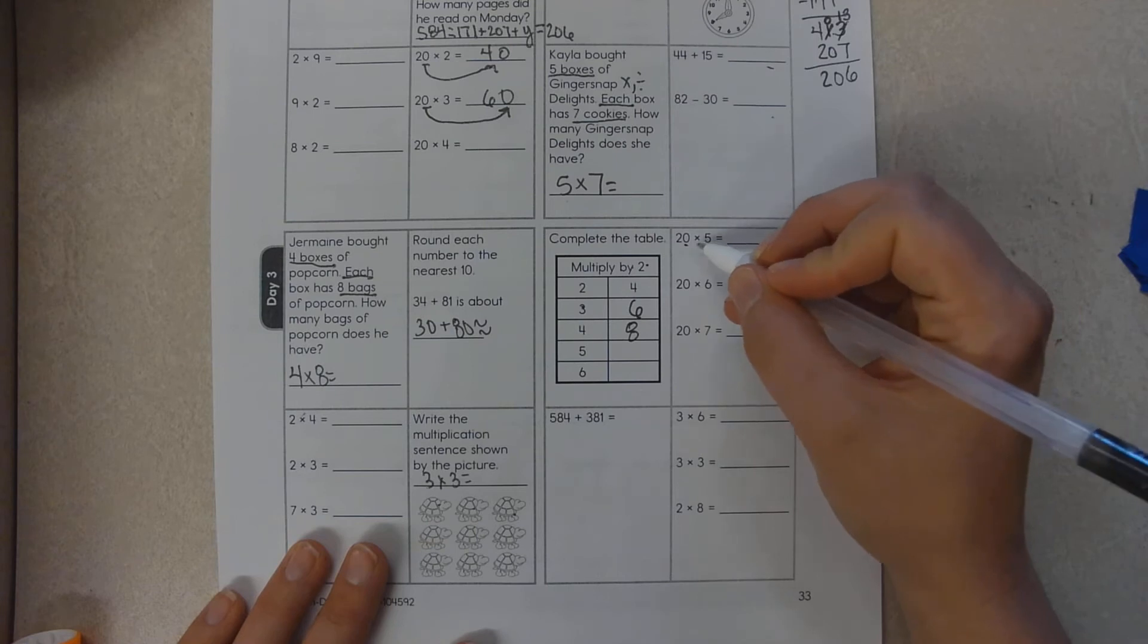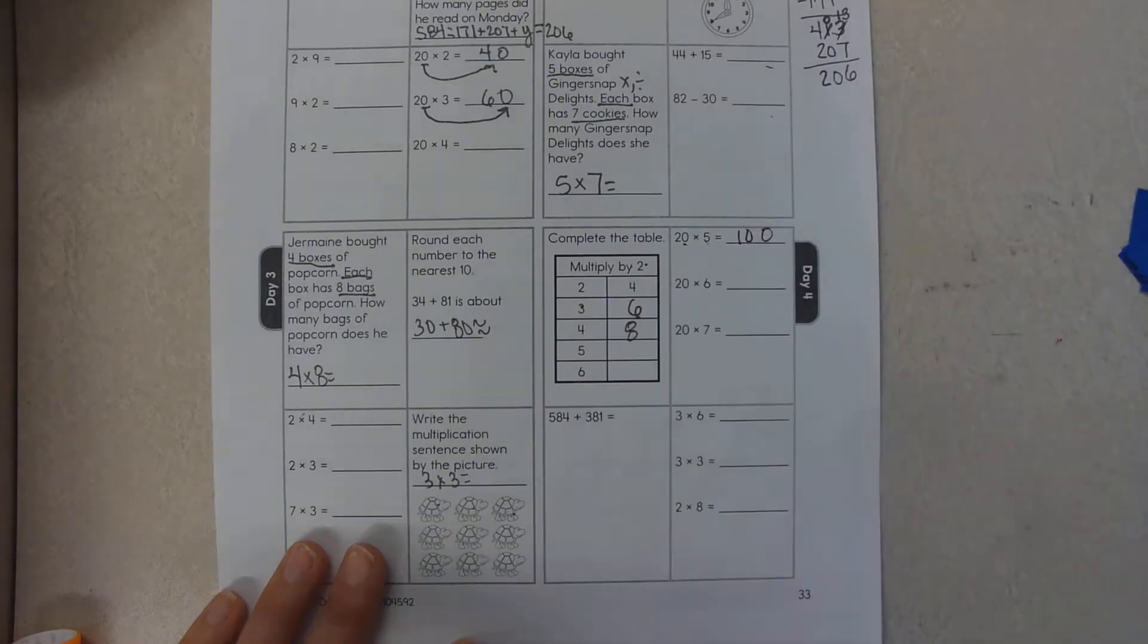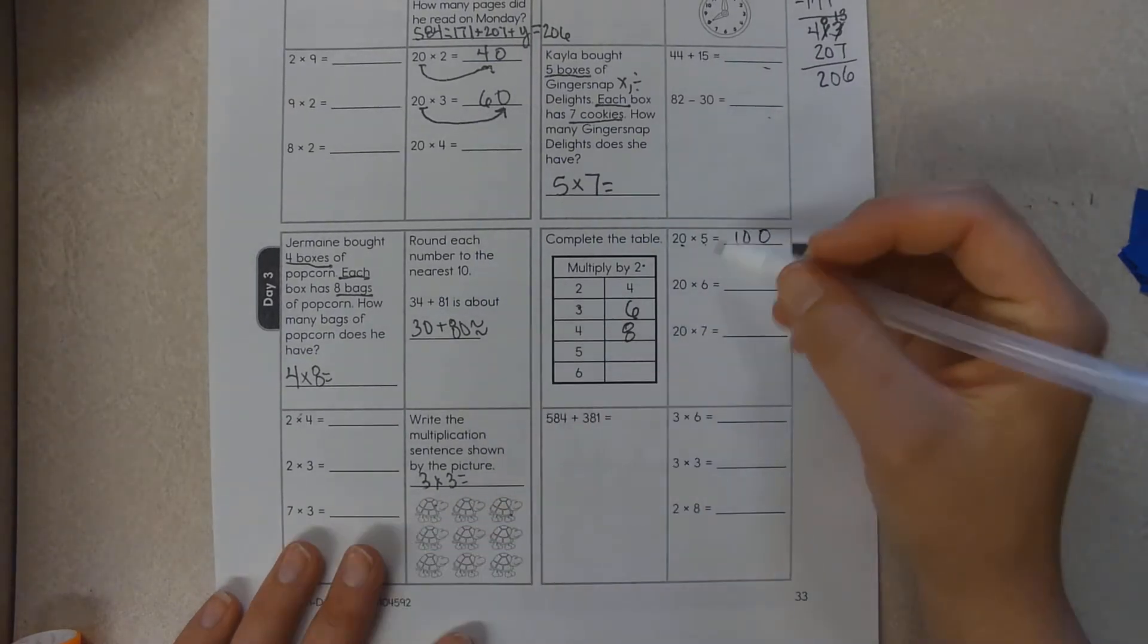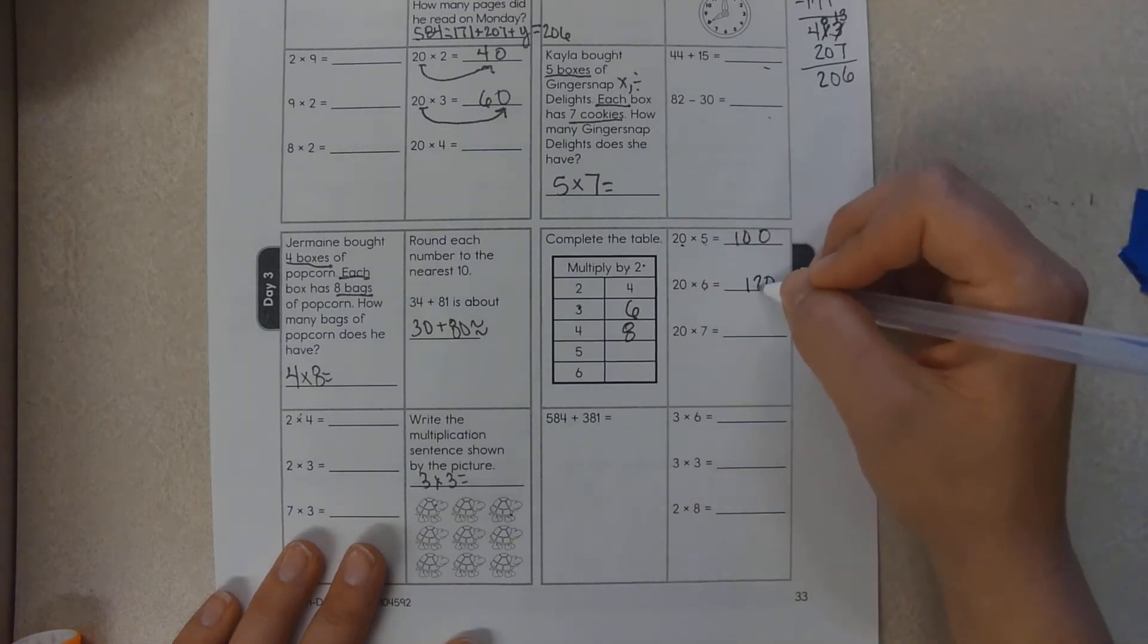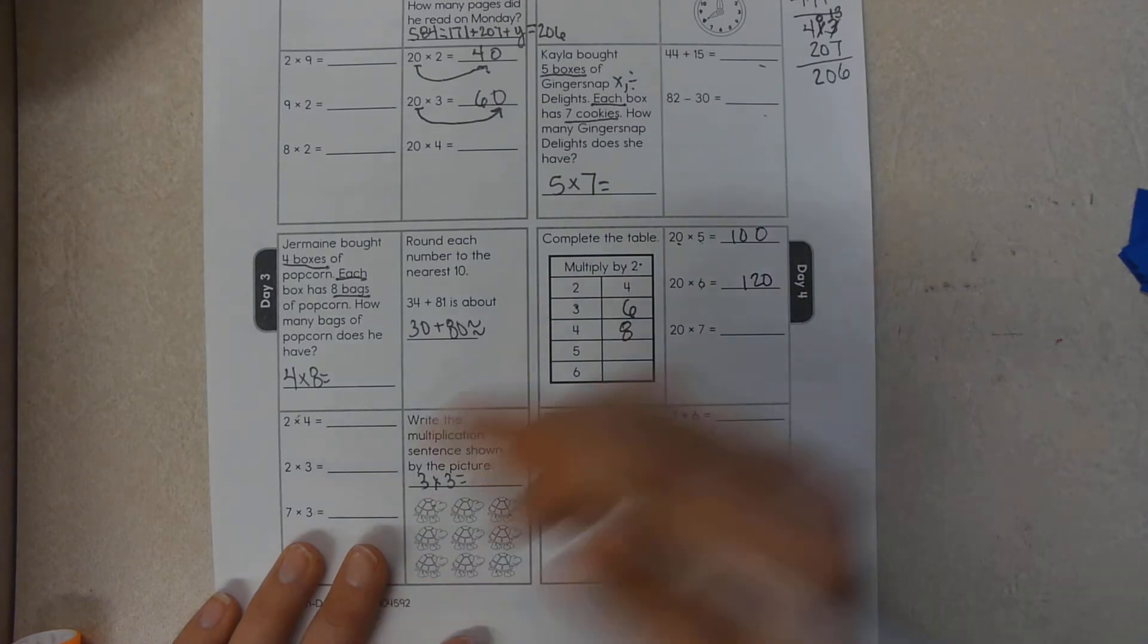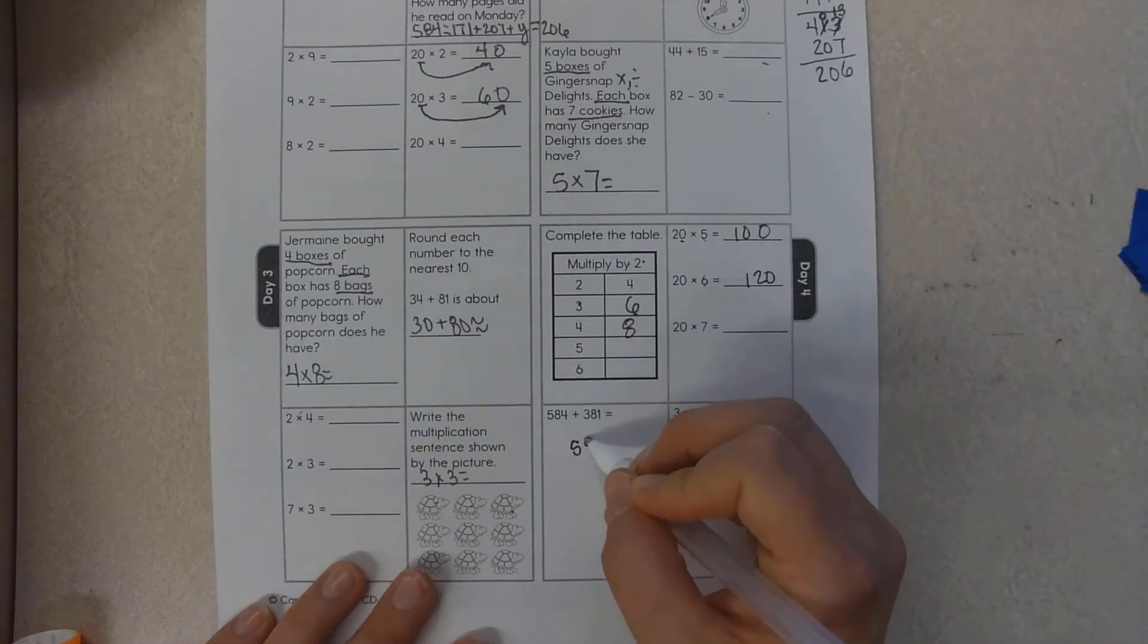Or you can say five times zero is zero, five times two tens is ten tens. Six times zero is zero, six times two tens is twelve tens. I will let you do the last one on your own.